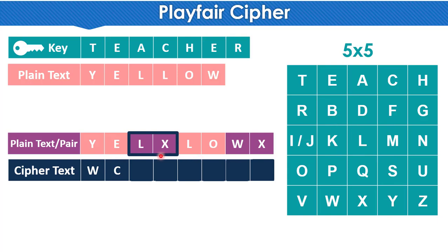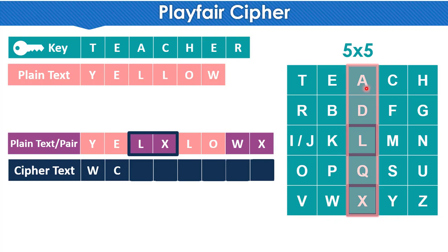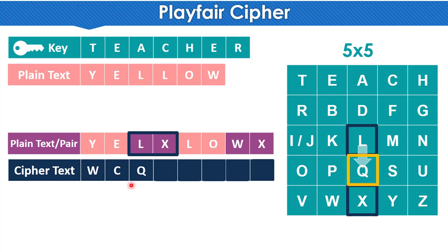Next pair is L and X. L is located here in the table, and X is located here. Now both L and X are in the same column. The rule for same column is: use the letter immediately below each letter. So the letter immediately below L is Q, and the letter immediately below X gives the corresponding cipher letter.